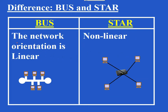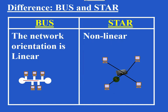The network orientation is linear in BUS topology and non-linear in star topology. You can see all the host computers are connected to a central cable, so the orientation is linear. In star topology, different hosts are connected to a central device known as the SWITCH, so certainly the orientation is non-linear.